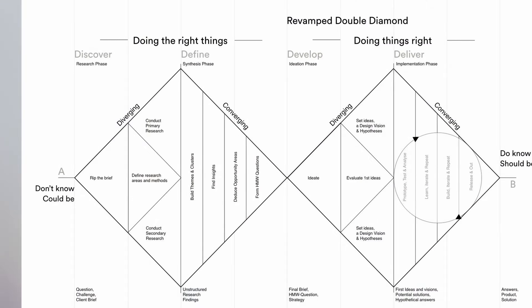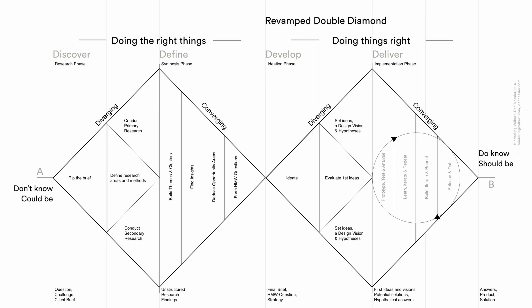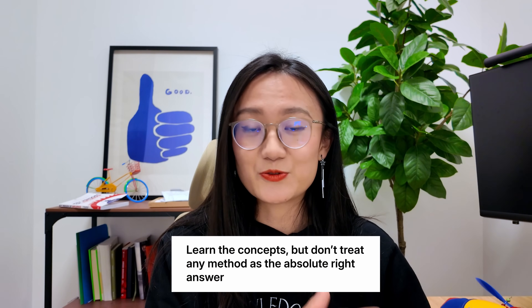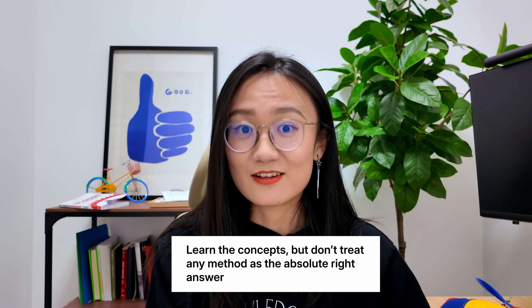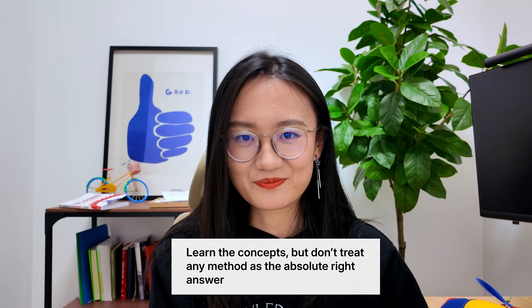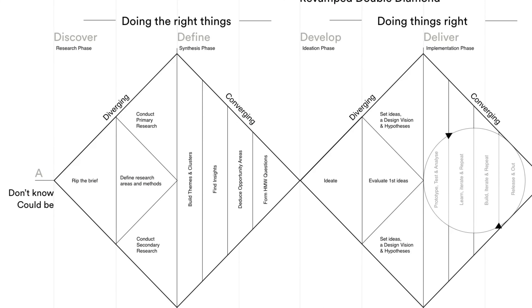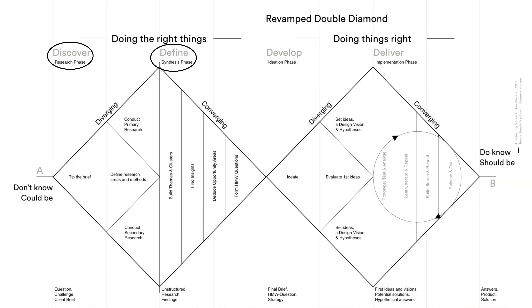Next, you can learn UX design. I'd suggest studying the double diamond process and researching about three methods for each step. Here's a crucial part: whatever you learn from a UX design course might not directly translate to how things are done in the real world. Learn these concepts and methods, but do not consider them the absolute right answer — there is no single right answer in UX design. For example, the first diamond — discovery and define stages — are often led by leadership, product managers, or your client.